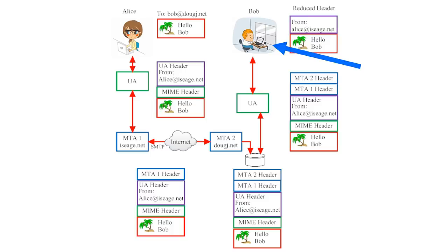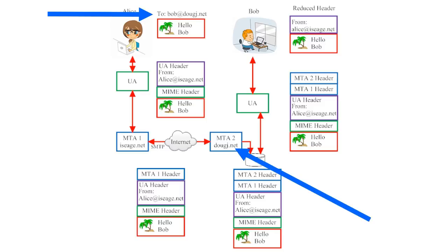This illustration helps show us how email addressing works. When Alice addresses this email, she specifies that it should go to bob@dougj.net. Everything following the '@' in an email address is the name of a specific message transfer agent somewhere on the internet. So the email system asks Alice which message transfer agent to send the email to — she responds: the one for dougj.net. Then it asks which user at that MTA to deliver it to, and Alice responds: send it to Bob. The email address tells the computer to send this email to the username Bob at the mail server called dougj.net.